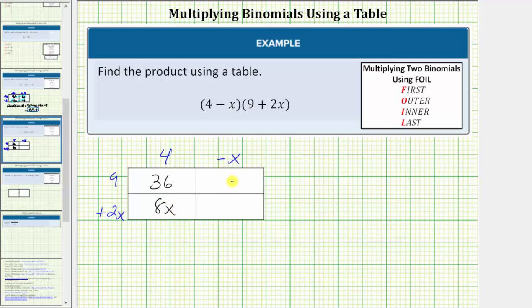Here we find the product of 9 and negative x, which is negative 9x. And for row two column two, we find the product of 2x and negative x, which is negative 2x squared.